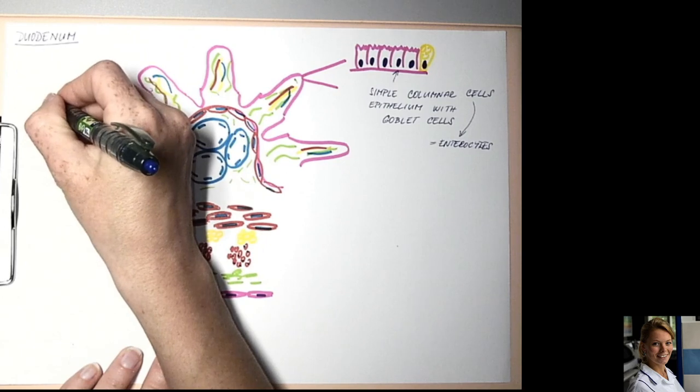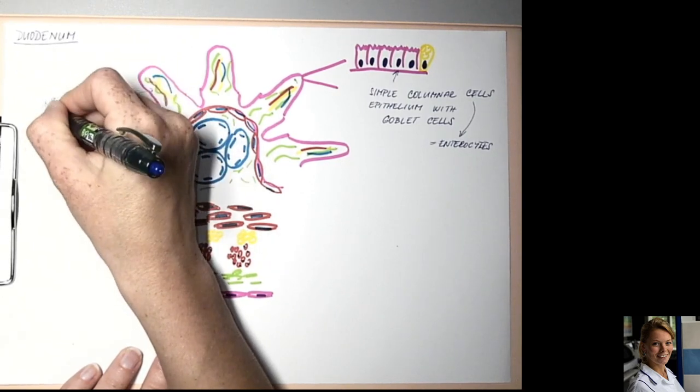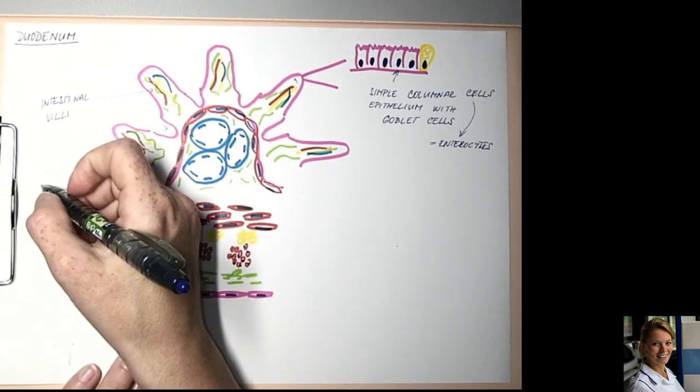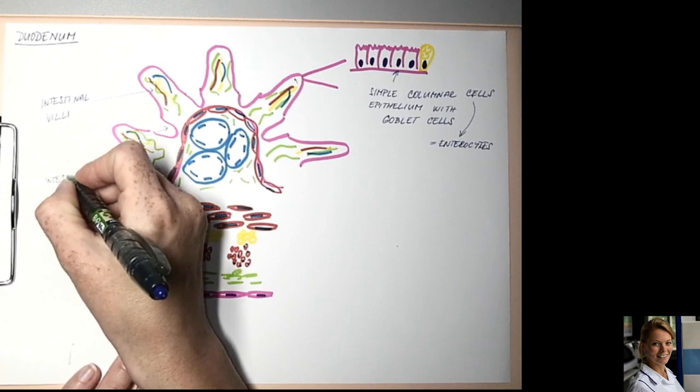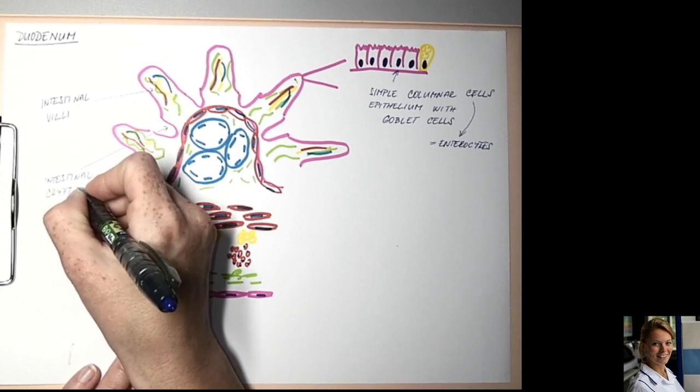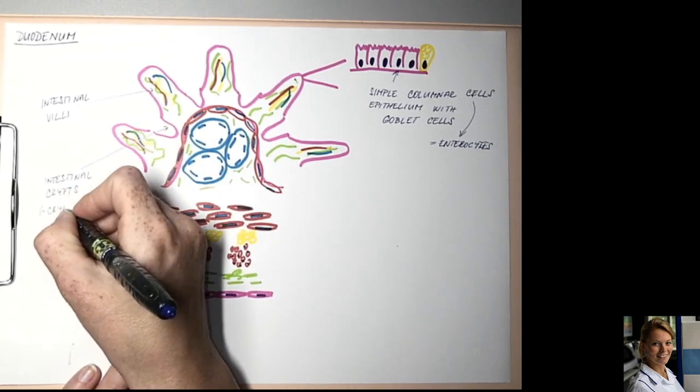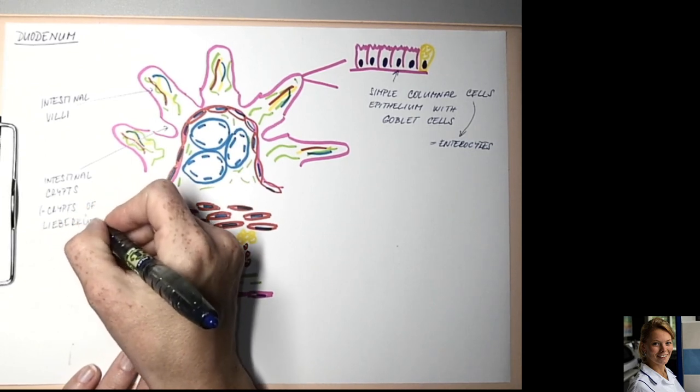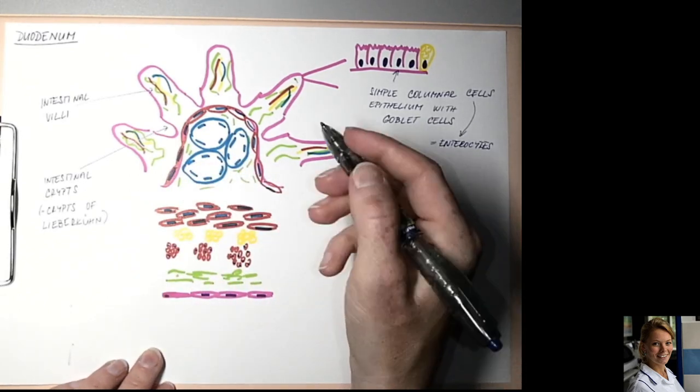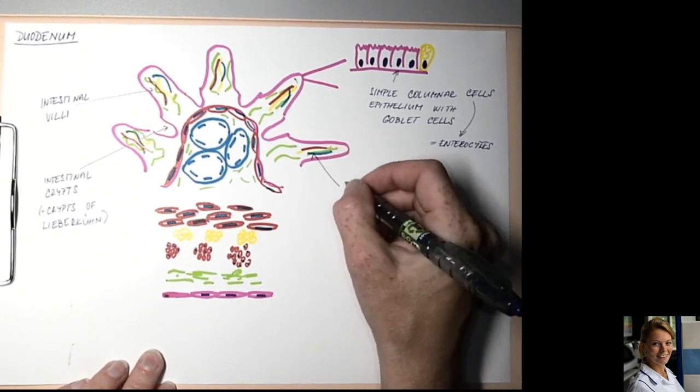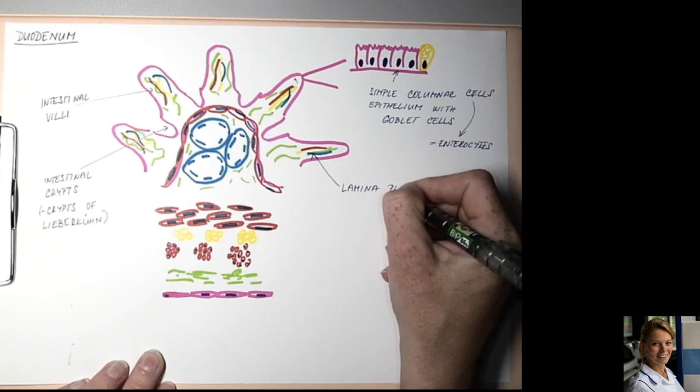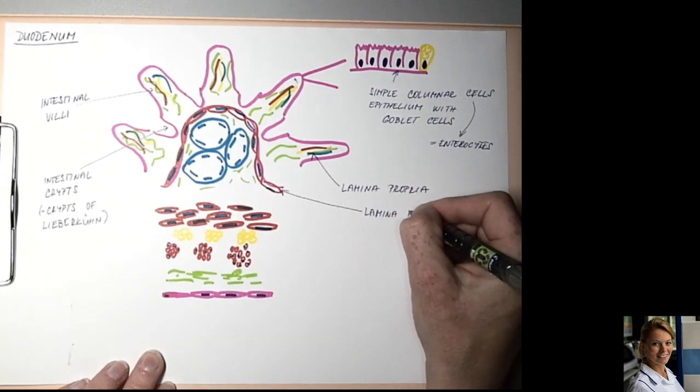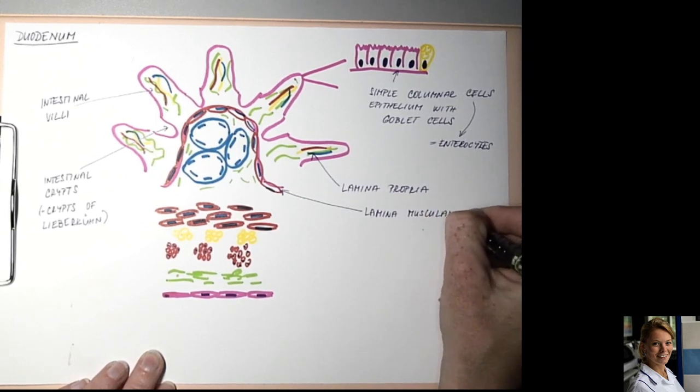These are the intestinal villi. The core of the villi is formed by lamina propria. Next layer is lamina muscularis mucosa.